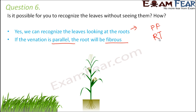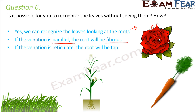Grasses, wheat, and maize have parallel venation and fibrous roots, whereas plants like rose and carrot have reticulate venation with tap roots.